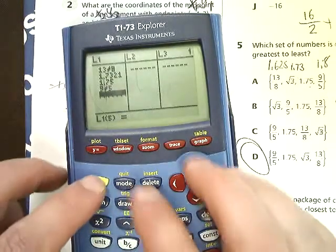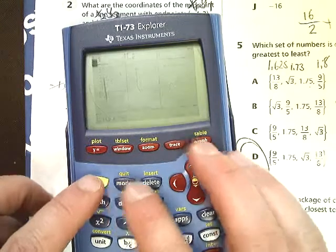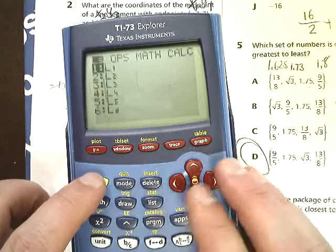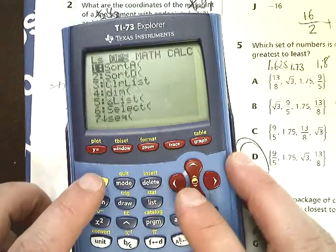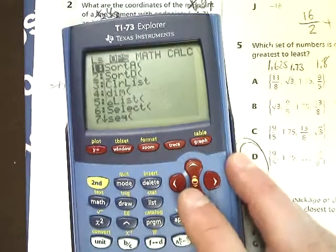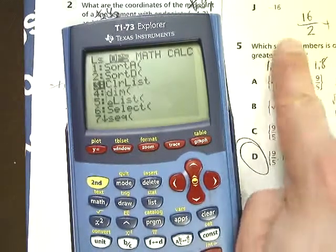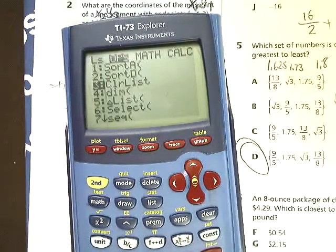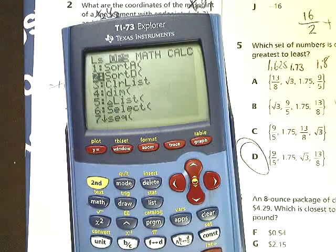Then I'm going to put them in greatest to least. So I hit second and quit. Then go second, stat. Go over to ops, which is operations. Sort D. This question says greatest to least, so that means it's going down, which is a descent. Sort D means sort descending.